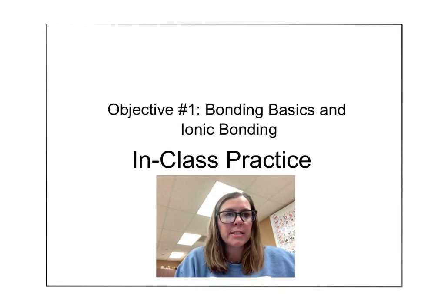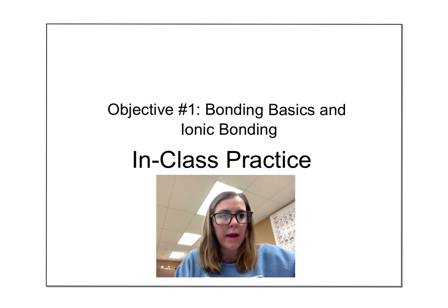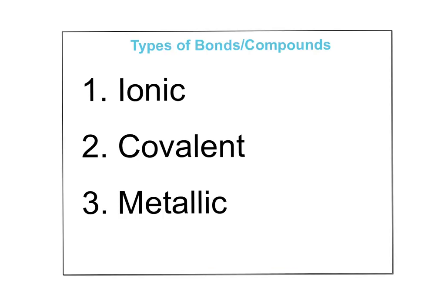So objective one is bonding basics and ionic bonding. We're going to do some practice together. This was in your first video, but just to recap, an ionic bond typically happens between a metal and a non-metal element. The metal has a positive charge, the non-metal has a negative charge, and they attract. The reason the metal has a positive charge is because it's giving away electrons. The non-metal takes those electrons, and when we have positive and negative, they're going to attract each other in the form of an ionic bond.